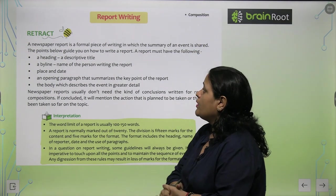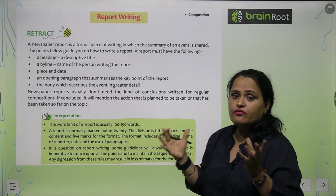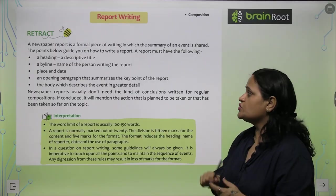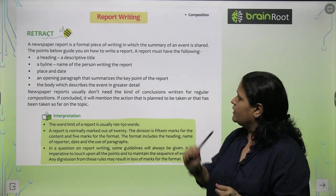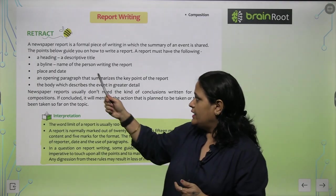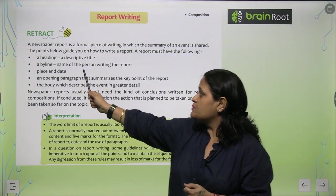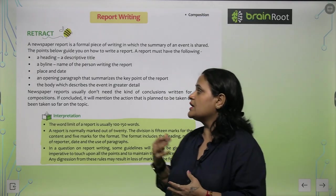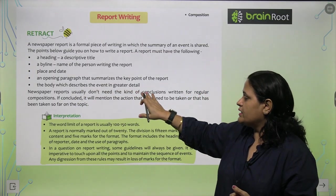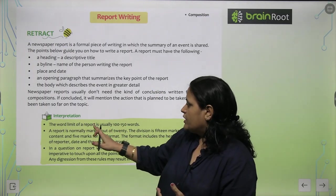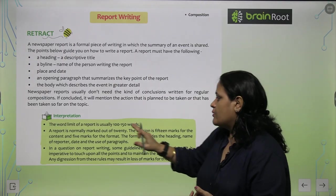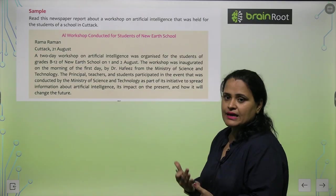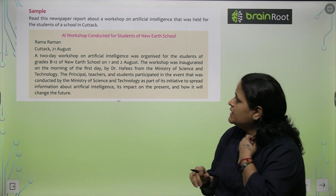Another composition topic is Report Writing. What is a report? You must have read different articles in the newspaper. A newspaper report is a formal piece of writing in which the summary of an event is shared. A report must have: a heading, a descriptive title, a byline with the name of the person writing the report, place and date, an opening paragraph summarizing the key points, and a body which describes the event in greater detail. The word limit is usually 100 to 150 words, and a report is normally marked out of 20.